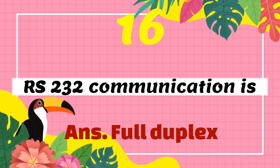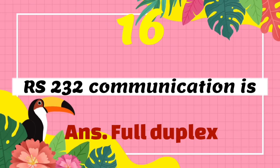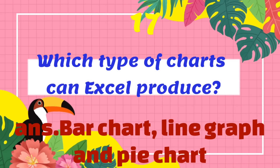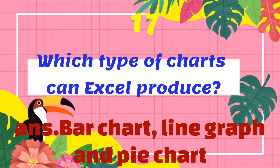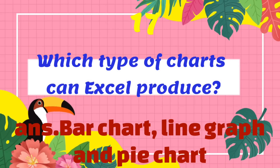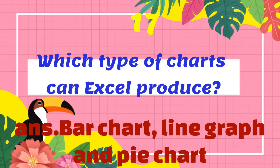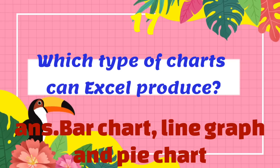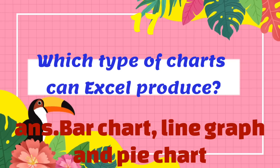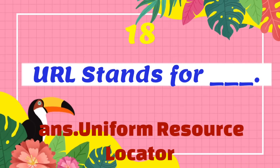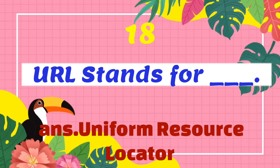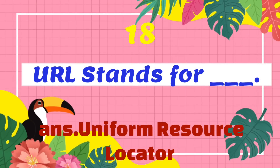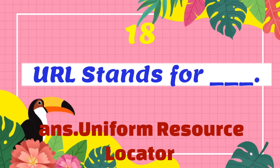Question number seventeen: which types of charts can Excel produce? The answer is bar chart, line graph, and pie chart. Question number eighteen: URL stands for what? The answer is Uniform Resource Locator.